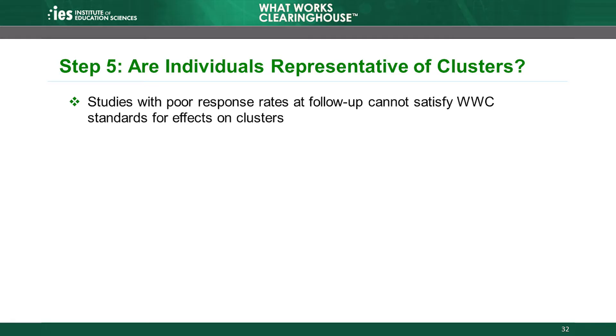Let's dig deeper into the first of the two requirements for satisfying WWC standards for evidence of effects on clusters: that the individuals in the analytic sample are representative of the clusters. When a study has a poor response rate at follow-up, it cannot satisfy WWC standards for effects on clusters. Suppose a study randomly assigned classrooms to conditions, but the school administered the outcome measure on a day when many students were pulled out of class for an assembly. The scores of the tested students may not represent how their entire classroom would have performed had all students been tested. So the students in the analytic sample may not be representative of the classrooms, and the study would not satisfy WWC standards for evidence of the effect of the intervention on clusters.